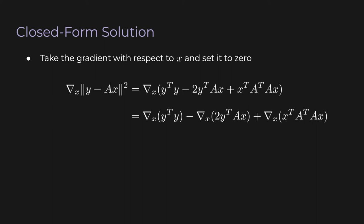And let's look at the first term here. It's the gradient with respect to x of y transpose y. But remember that y, it's a constant. It's given to us. And there's no x showing up here. So the derivative of constant is just zero.